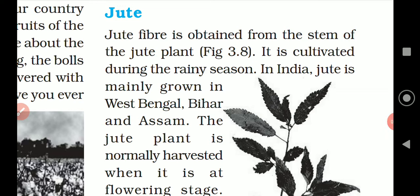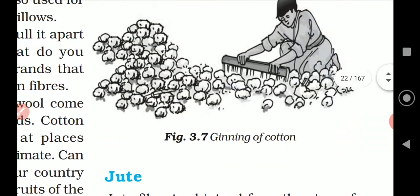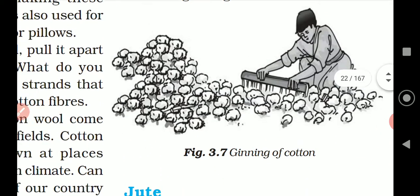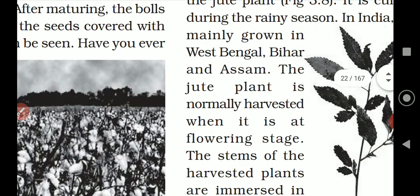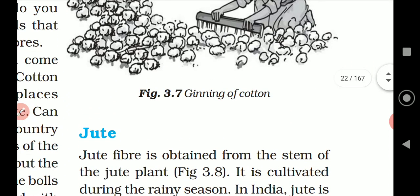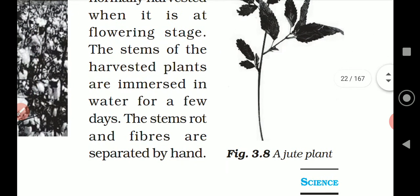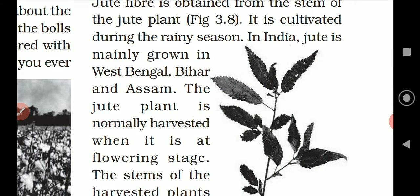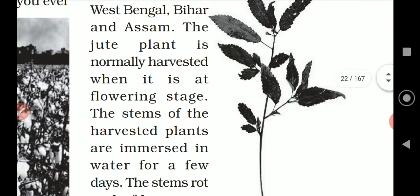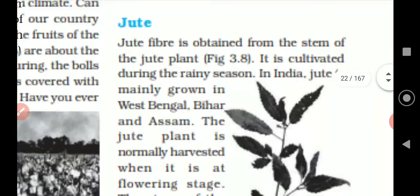Jute. Now, children, you have to draw the diagram of the jute plant. You also have to draw the gaining of the cotton. How does this happen? Cotton field you don't have to draw, but gaining of the cotton is very important. And then the jute plant is very, very important. You have to underline the full paragraph of jute, and this jute plant is very important. So, let's read jute.